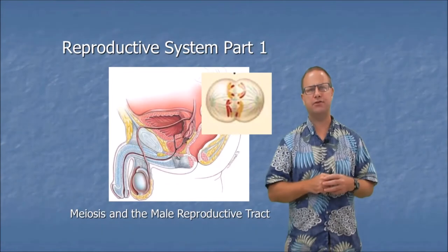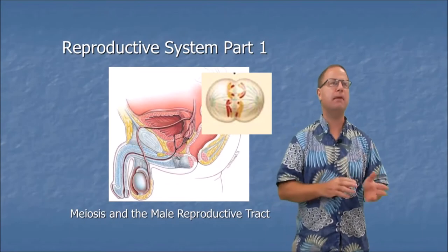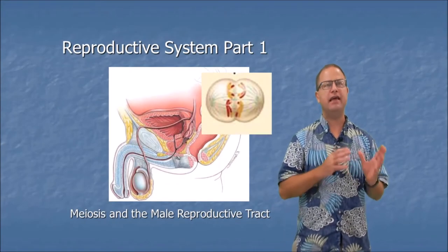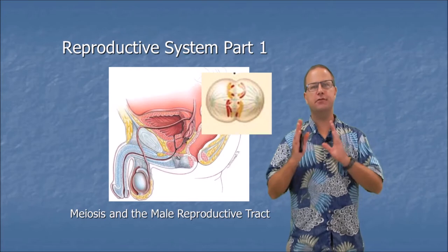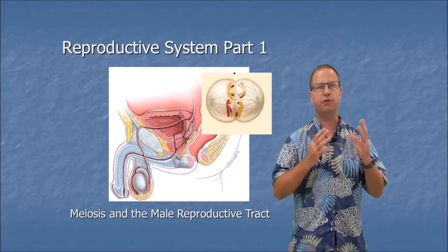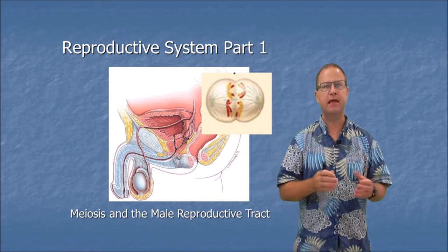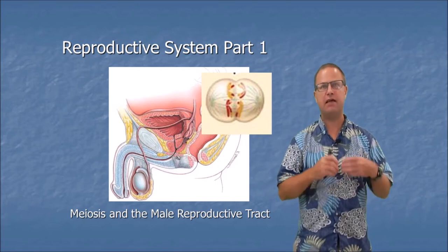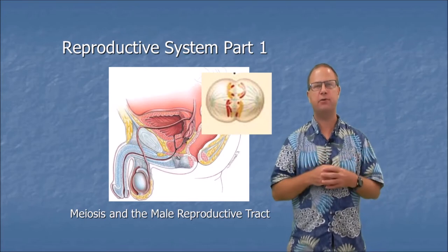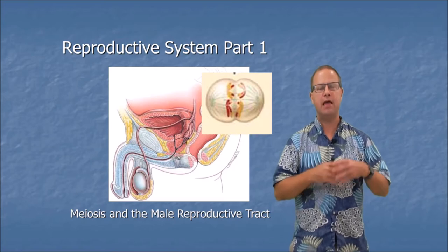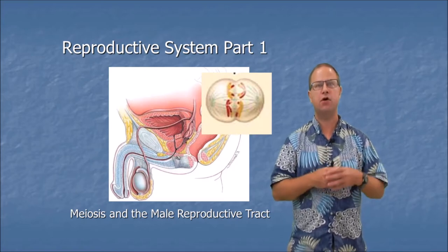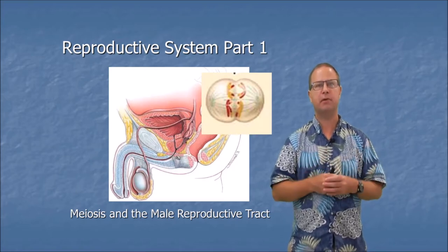Hello human biology students and welcome back to Biology 100. Today we're going to have the first of two lectures on the reproductive system. In this lecture we're going to talk about the anatomy and function of the male reproductive system and also the process of gametogenesis, or production of sperm and eggs.